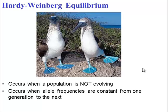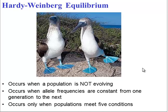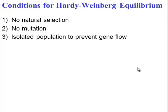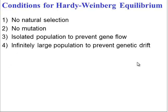And in order for a population to remain in equilibrium, it has to satisfy several conditions. Let's take a look at those conditions. The first one is no selection. No mutation is the second. An isolated population to prevent gene flow. An infinitely large population to prevent genetic drift. And finally, random mating.